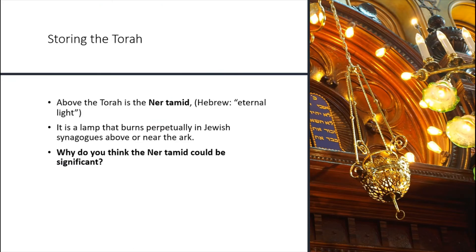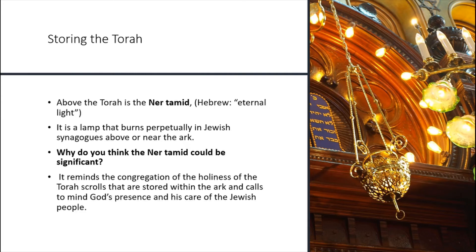Above the Torah is the Ner Tamid, which is Hebrew for 'eternal light.' This lamp burns perpetually in Jewish synagogues above or near the Ark. It is there to remind the congregation of the holiness of the Torah scrolls stored within the Ark, and it calls to mind God's presence and his care for the Jewish people — a real symbolic meaning for the congregation.